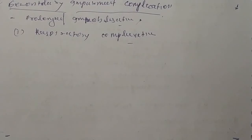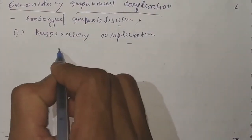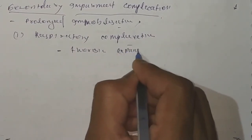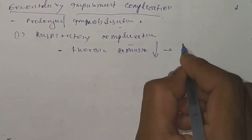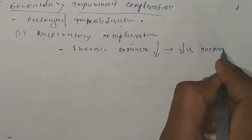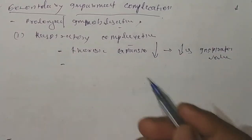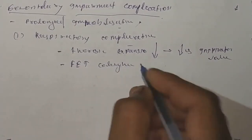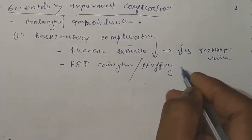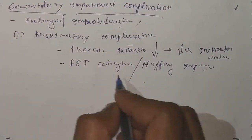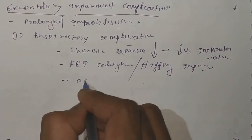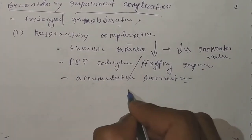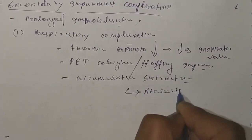As we have already seen in a previous video about respiratory complications, because of spinal cord injury the thoracic expansion decreases, which leads to a decrease in inspiratory volume. Also, forced expiratory techniques like coughing and huffing get impaired and become ineffective, which leads to accumulation of secretions, resulting in atelectasis and pneumonia.